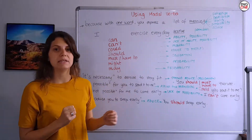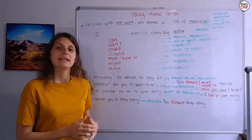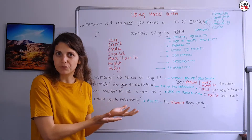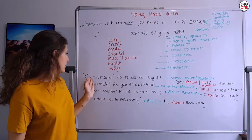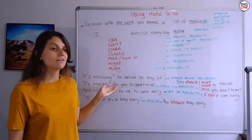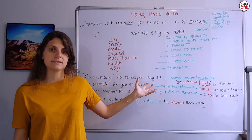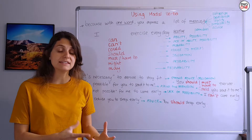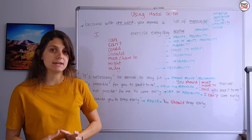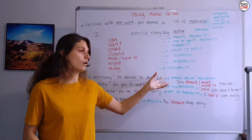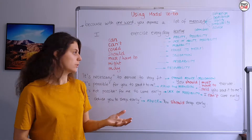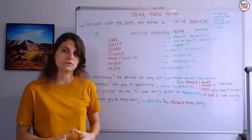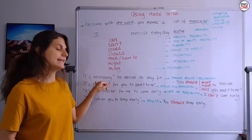Or 'I may' — also probability. Let's take a look at some examples of sentences that people say. 'It's necessary to exercise to stay fit.' You don't have to, but if you want to stay fit, it's a very good idea — a strong piece of advice or obligation almost. So you should exercise and you must exercise instead of saying 'it's necessary.'